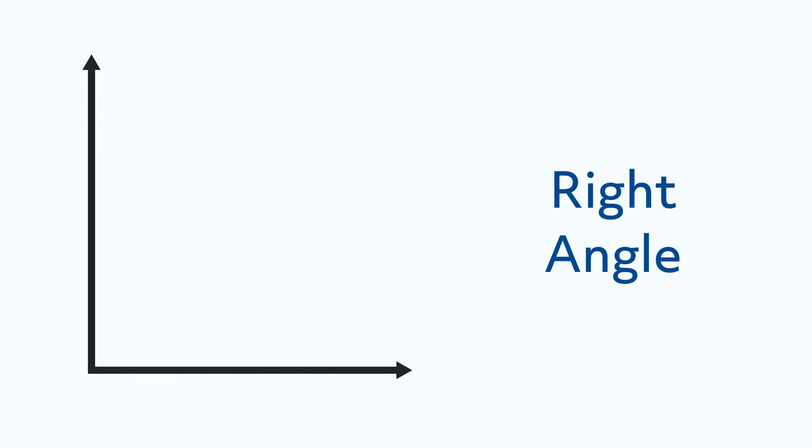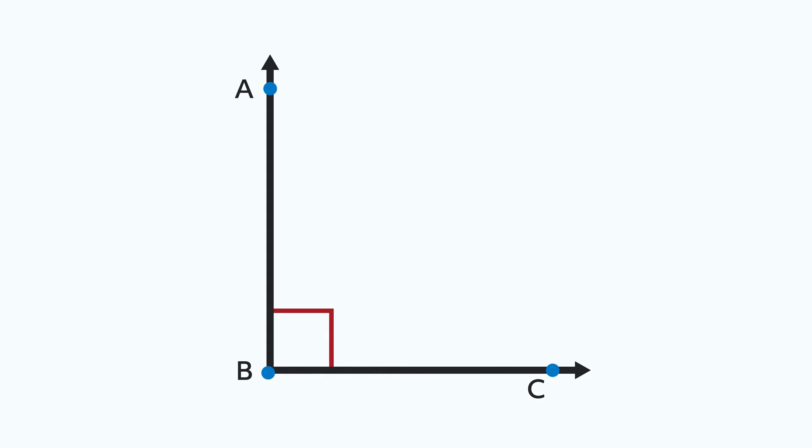Let's look at a variation of our two-ray angle. But this time, let's make it so that they are perpendicular to each other, which means the angle between them is 90 degrees. Here, we've created a right angle. Notice that it has a different angle symbol than our first angle. Instead of an arc, it has a square.